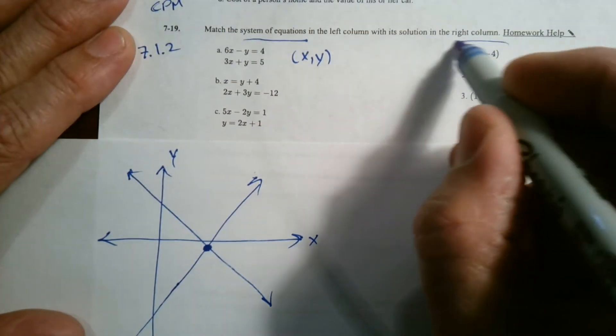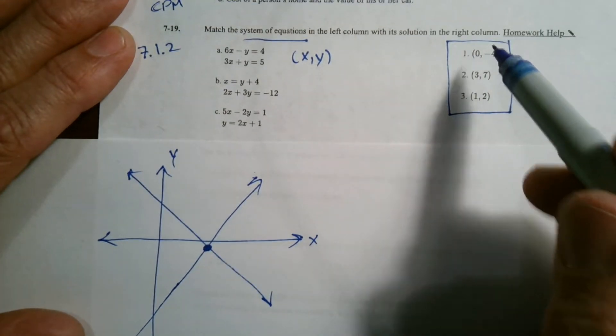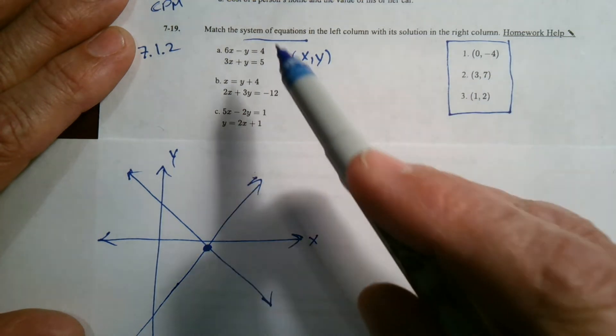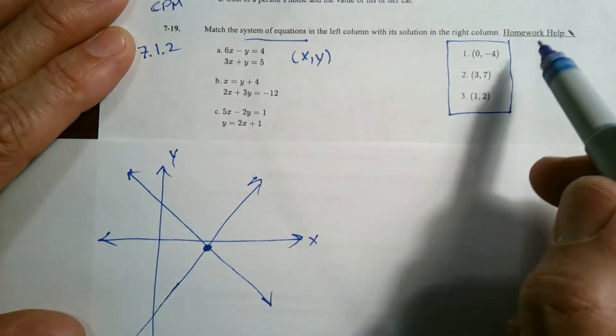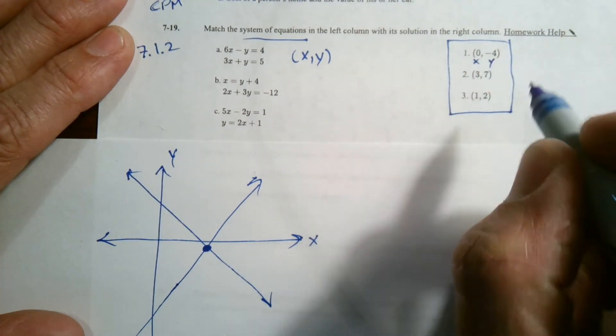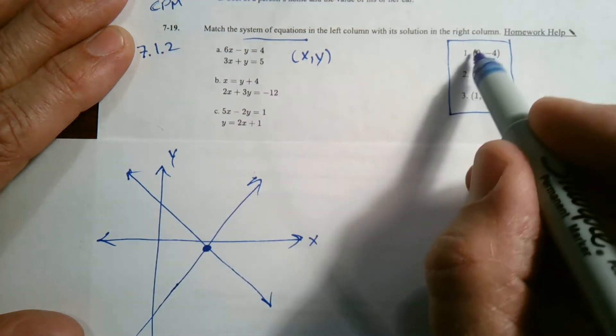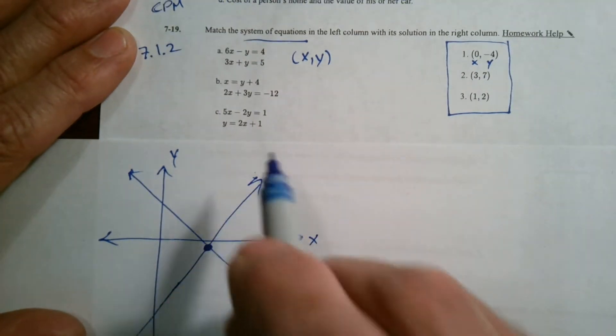But because they've given me these possible answers over here, I know actually, in fact, one of these, each one of these lines up with each one of these. I'm going to use this idea of if that's the case. If this is a possible x, y for one of these, I'm going to use those numbers and find the one that works.